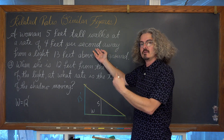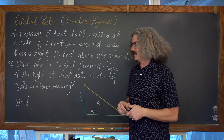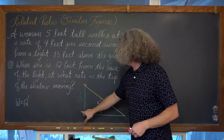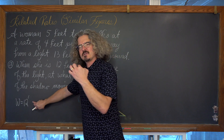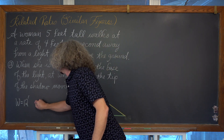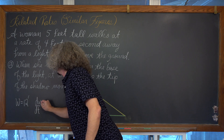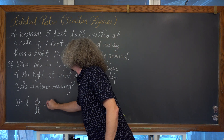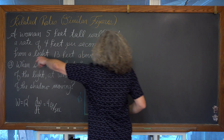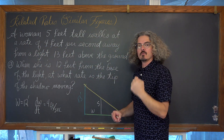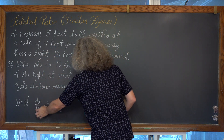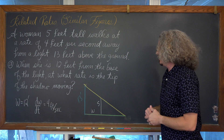A rate of change is slope, and in calculus what gives us slope? Derivatives. So we need derivative notation to identify and label this 4. If w is the distance she is away from the lamp, dw/dt is equal to 4 feet per second. Rate means slope, and slope in calculus comes from a derivative. Thus we have derivative notation to go along with that value of 4.